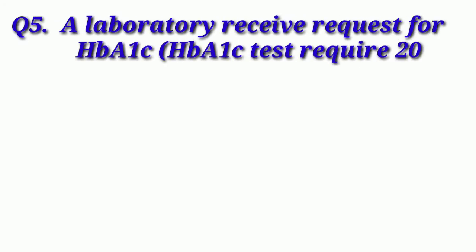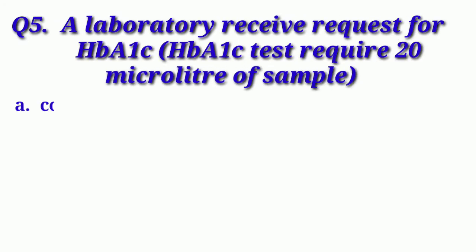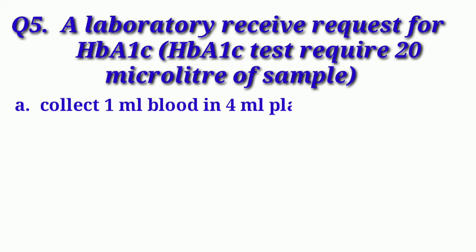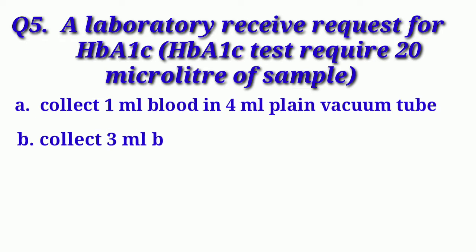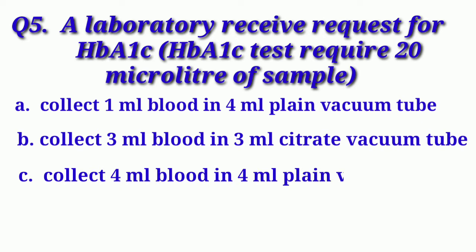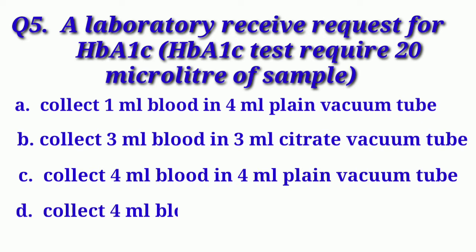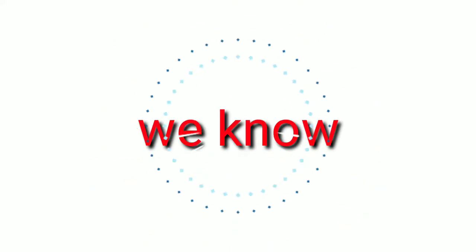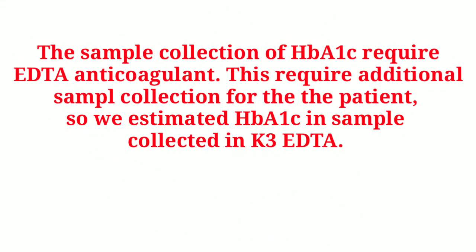Our next question is: A lab receives a request for HbA1C. Our options are: Option A: Collect 1 ml blood in 4 ml plain vacuum tube. Option B: Collect 3 ml blood in 3 ml citrate vacuum tube. Option C: Collect 4 ml blood in 4 ml plain vacuum tube. And Option D: Collect 4 ml blood in 4 ml EDTA vacuum tube. We know the sample collection for HbA1C requires EDTA anticoagulant.